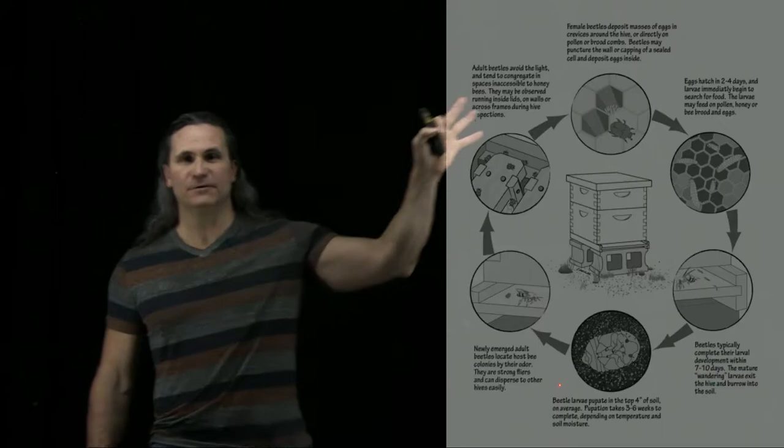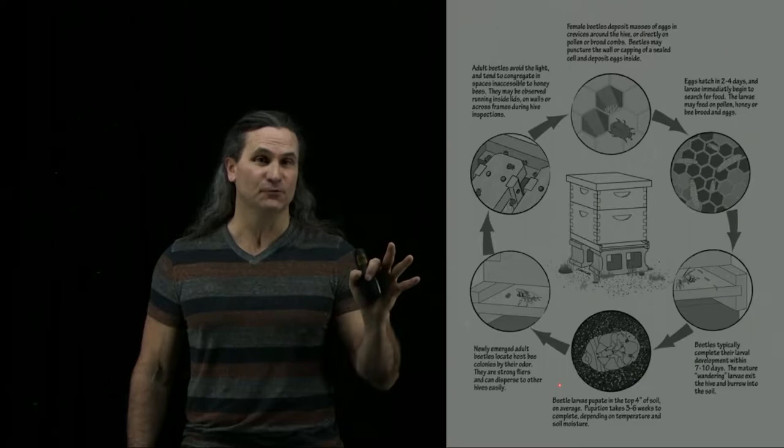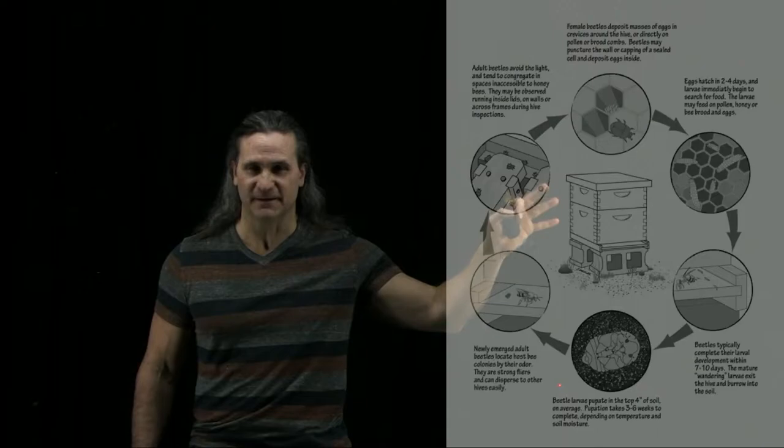What they do is they'll lay their eggs inside the honey bee colony. They can lay them in crevices and corners, or they'll sometimes even lay them on the bee cells and on the brood food — that is the pollen they have stored in the hive. When those eggs hatch, they become pupae and the pupae move throughout the colony. It takes them about seven to ten days to pupate.